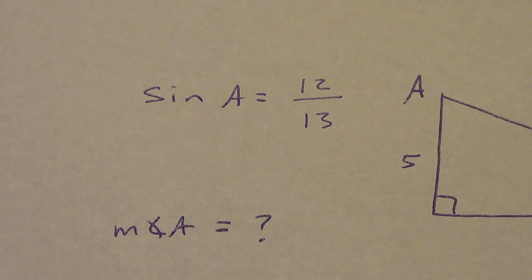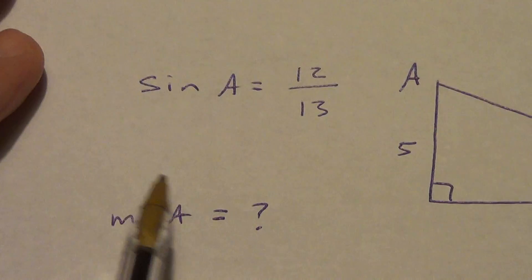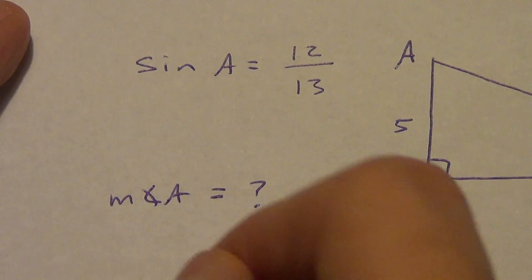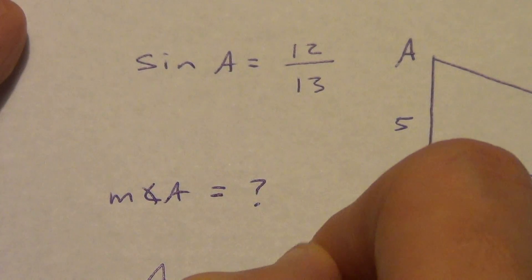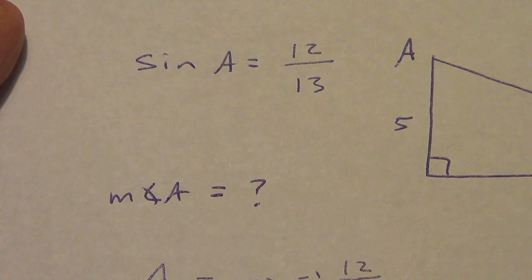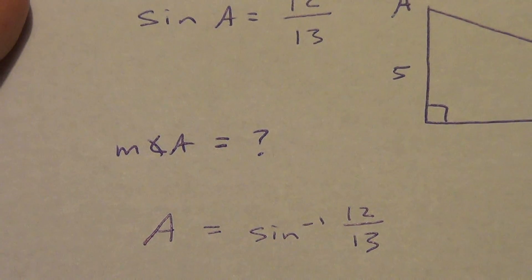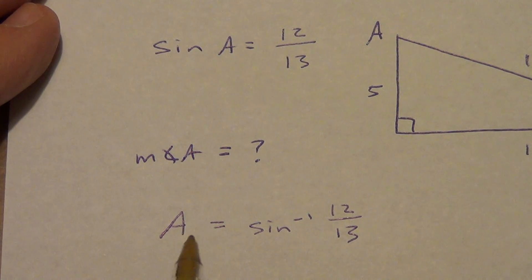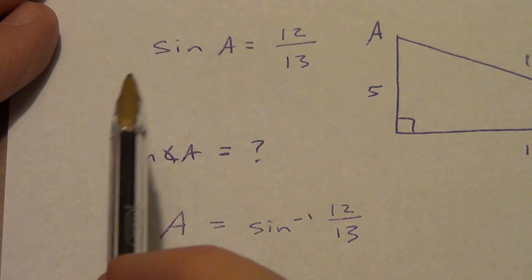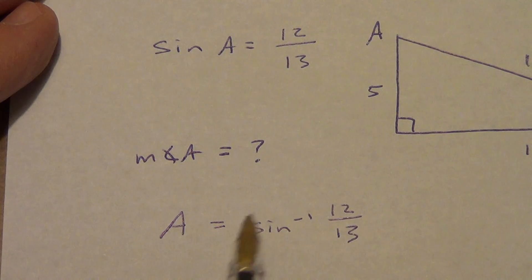Multiplication and division cancel each other out. A square root and a squared cancel each other out — we've been doing that with the Pythagorean Theorem. So when we see sine of A equals 12 over 13, the very next thing we write down is A equals the inverse sine of 12 over 13. We're applying the inverse sine to both sides; it cancels the sine, leaving A equals inverse sine of 12 over 13, which we then type into our calculator.